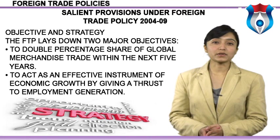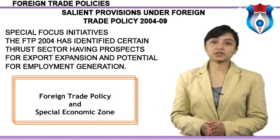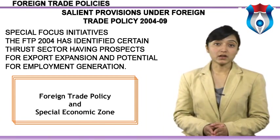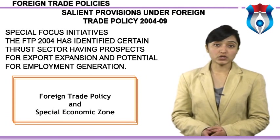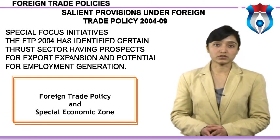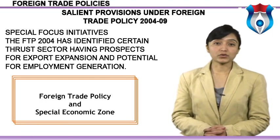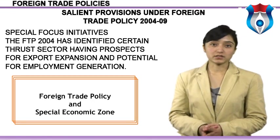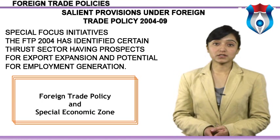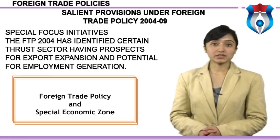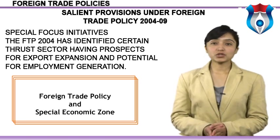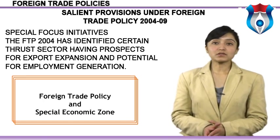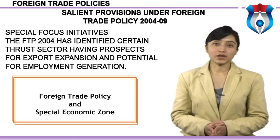The FTP 2004 has identified certain thrust sectors having prospects of export expansion and potential for employment generation. These thrust sectors include agriculture, handlooms and handicrafts, gems and jewelry, and leather and footwear sectors. Sector-specific policy initiatives for the thrust sectors include, for the agriculture sector, the introduction of a new scheme called Vishesh Krishi Upaj Yojna to boost exports of fruits, vegetables, flowers, minor forest produce, and their value-added products.